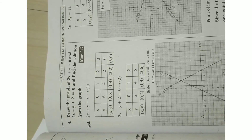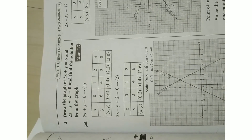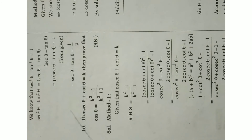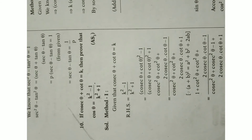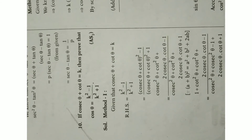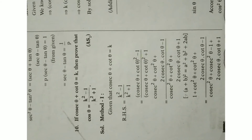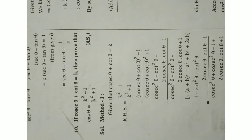An expected graph question from chapter four: draw the graph of two linear equations and find the solution from the graph. Also, one more important question: if cosec θ + cot θ = k, prove that cos θ = (k² − 1)/(k² + 1). There are two methods — method 1 and method 2.